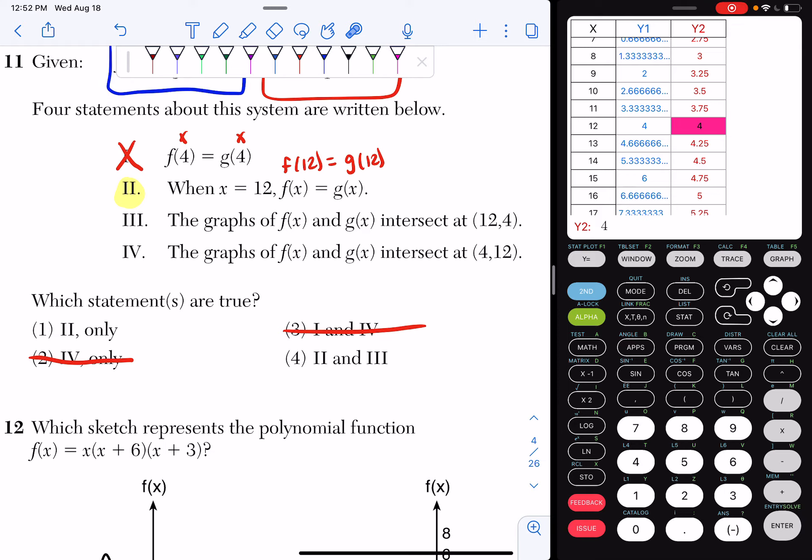So I am actually going to not even look at Roman numeral 4. I'm going to look at Roman numeral 3. It says the graphs of f of x and g of x intersect at 12 comma 4.